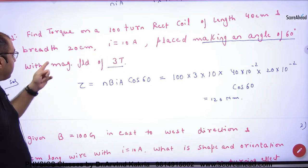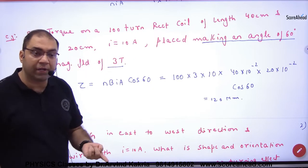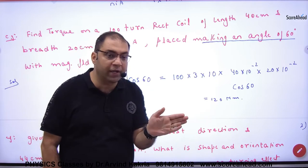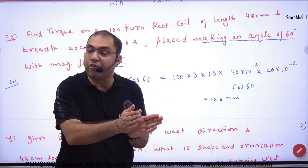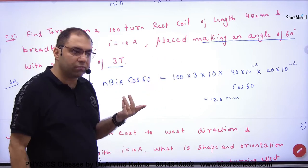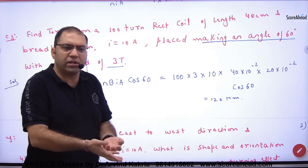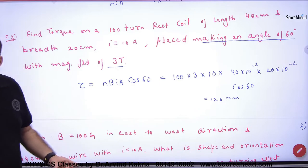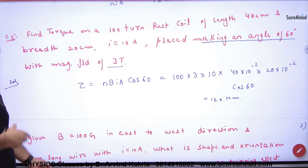Making an angle of 60 degrees with the magnetic field. The loop has made it with B. So which formula? We have to identify this: cos or sine. So the loop has made an angle, cos is the formula.